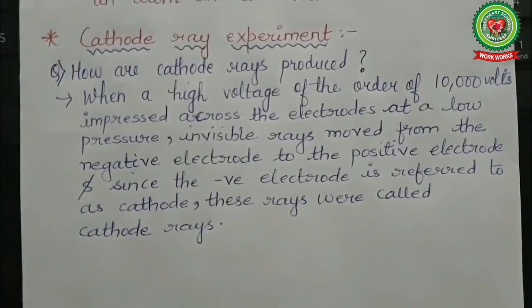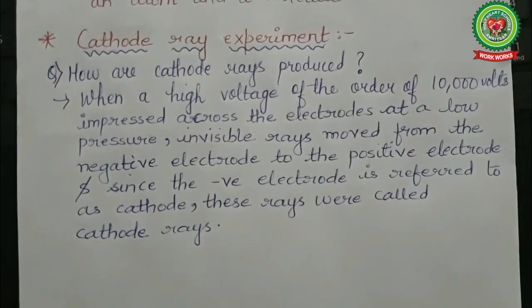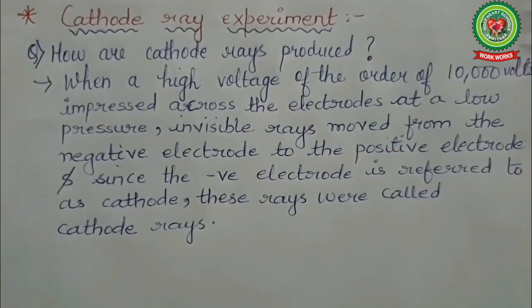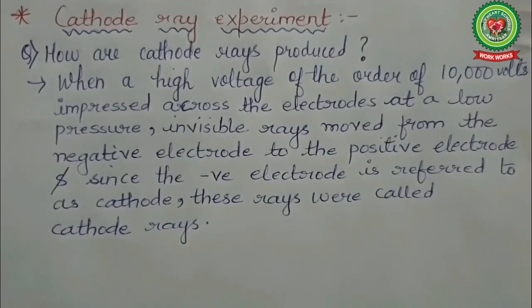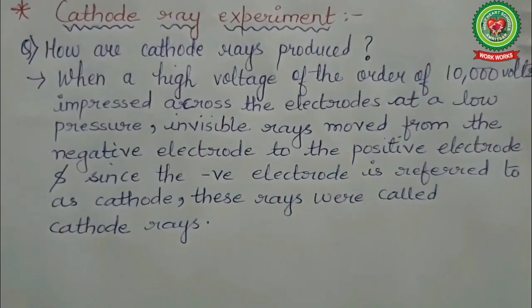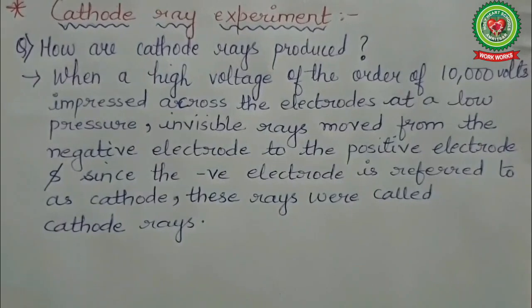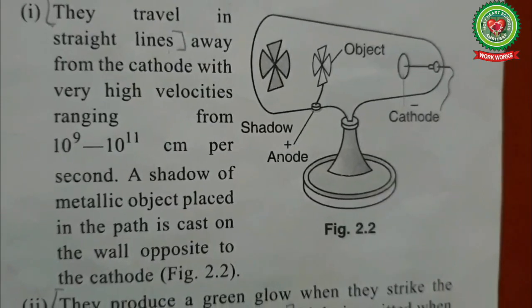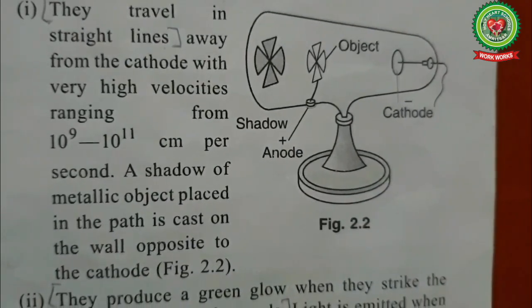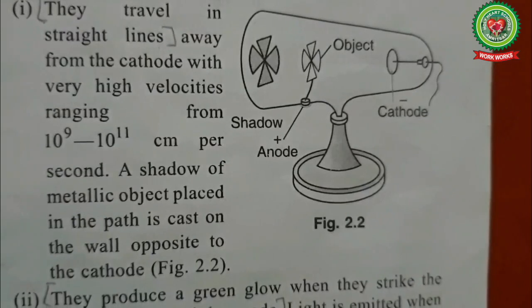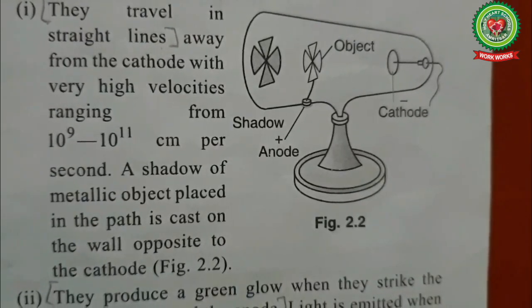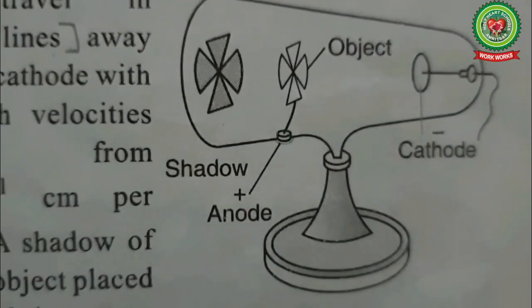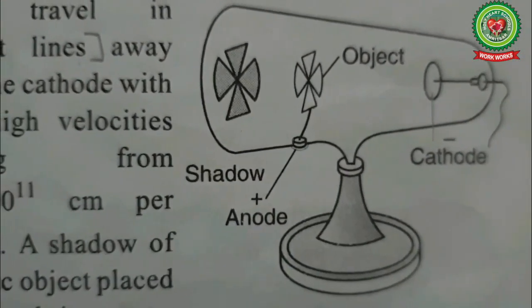Further investigations were made by Crookes, J.J. Thomson, and other scientists. It was found that these rays possess characteristic properties. The first property was that cathode rays travel in straight lines away from the cathode with very high velocity, ranging from 10⁹ to 10¹¹ centimeters per second. This was studied by placing an object between cathode and anode, and a shadow was cast on the opposite screen.